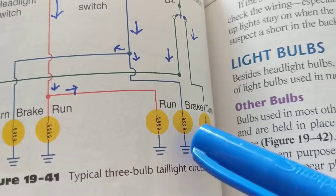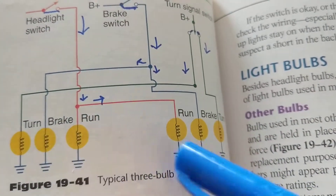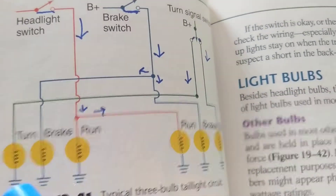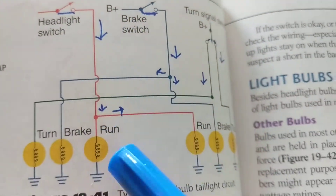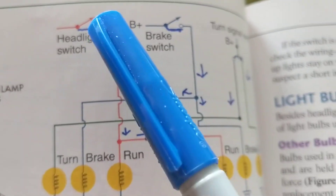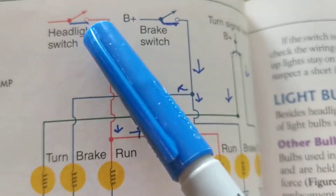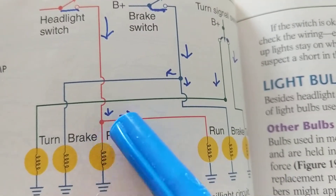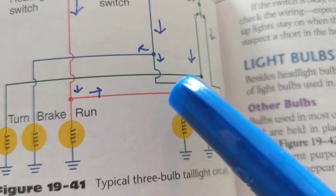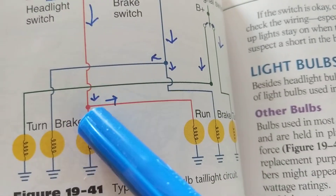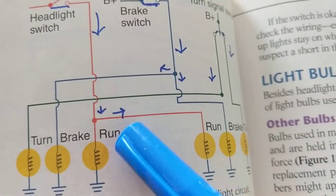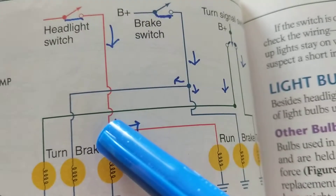The other side of each bulb goes to ground to complete the path. So if both headlights do not come on, that could indicate the switch is faulty — not making contact — or there is an open somewhere along the line common to both. If there is a break in a branch after the node, only that one light is affected. The break has to be between the switch and the node to knock out both lights.